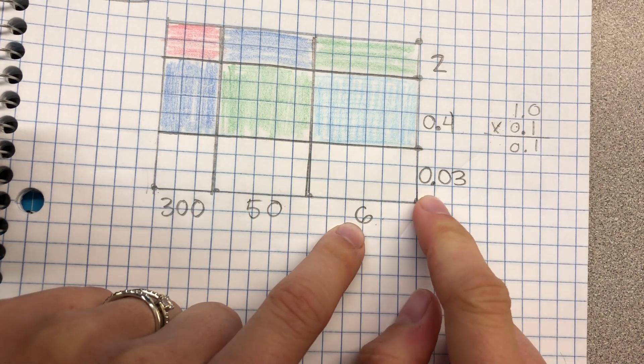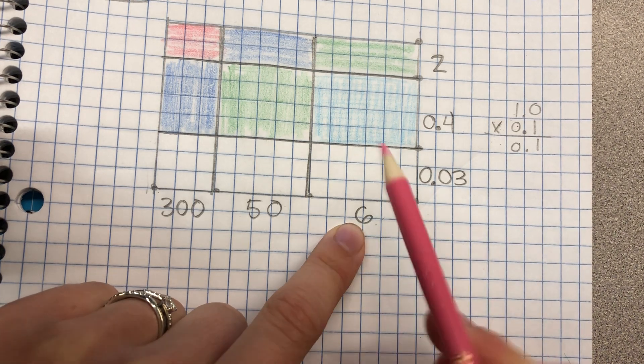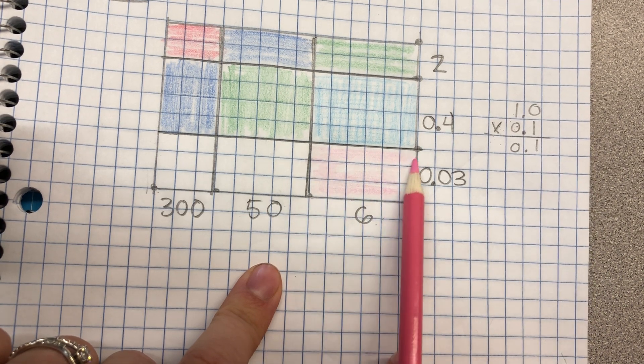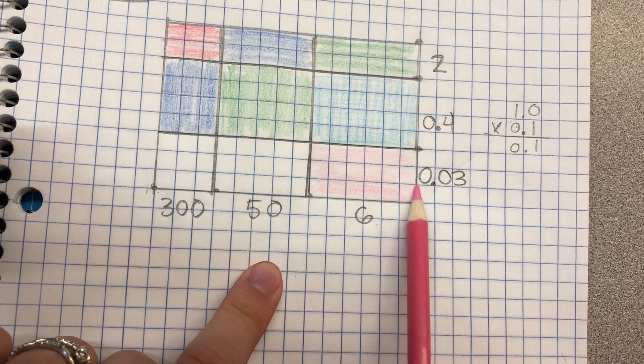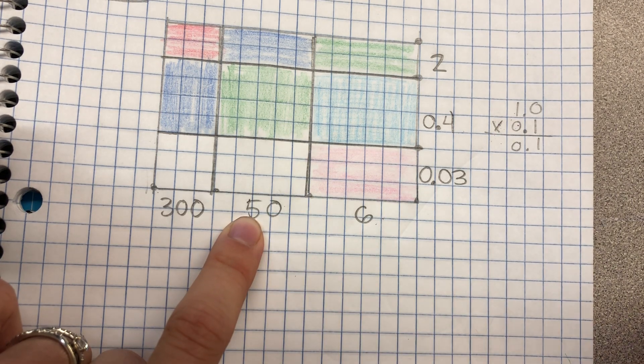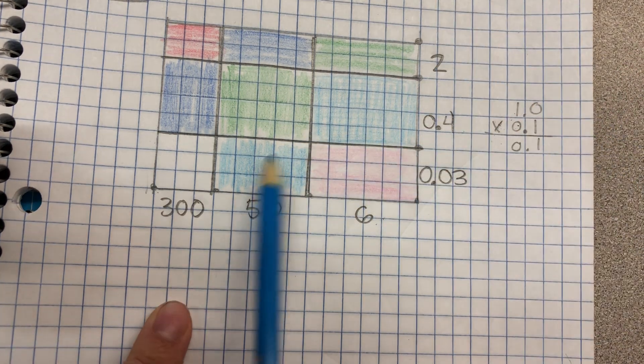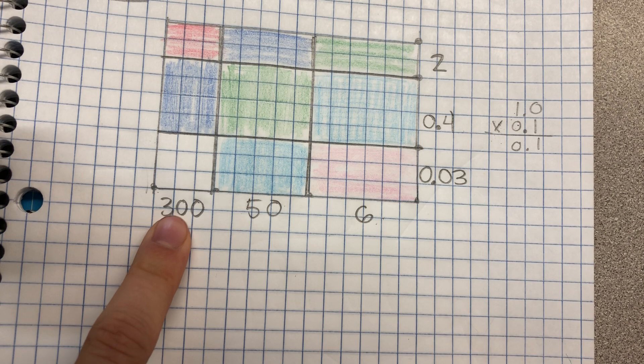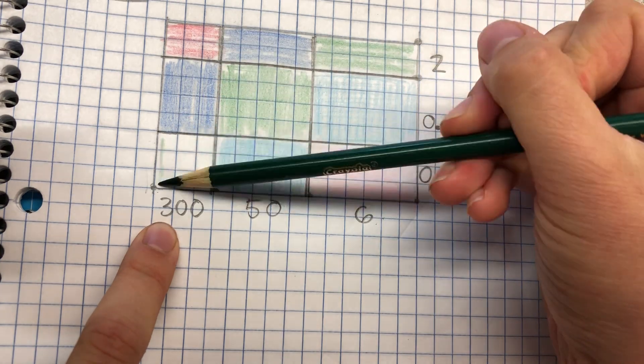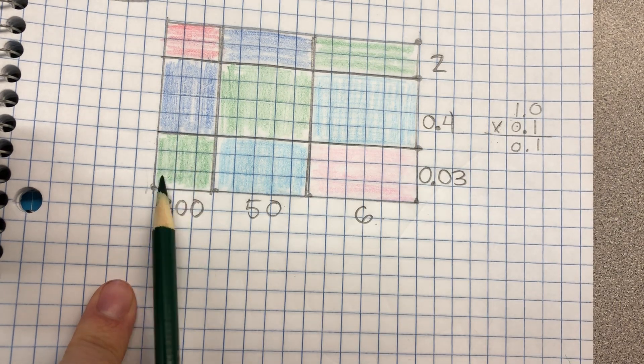Moving down, now we're going to multiply a unit times a hundredth. Now a unit times a hundredth is a hundredth. So I'm going to shade that in pink for our hundredths. Then if I multiply a hundredth times a tenth, I get a tenth. I'm going to shade that in. And then I multiply a hundredth times a hundredth. And I get a unit.